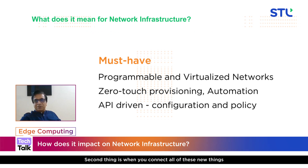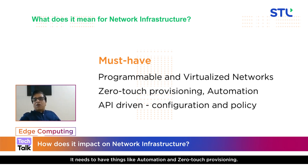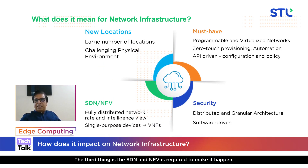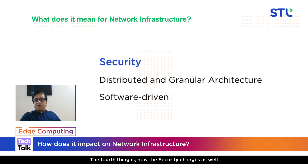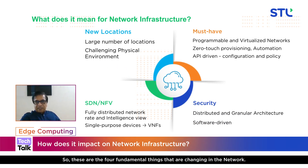The second thing is, when you connect all of these new things at a huge number of locations, you cannot manage such a large number of devices on a physical basis — it needs to be virtual, with automation and zero-touch provisioning. The third thing is SDN and NFV are required to make it happen. The fourth thing is security also changes as the topology, architecture, and dynamism of computing changes. Security needs to be distributed, granular, and software-based. These are the four fundamental things that are changing in the network.